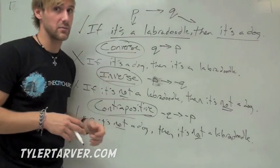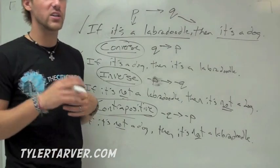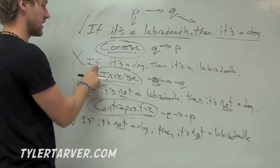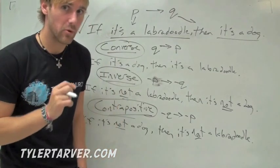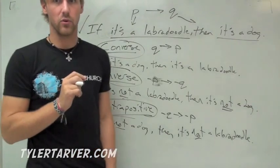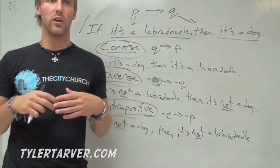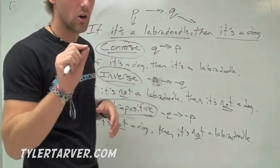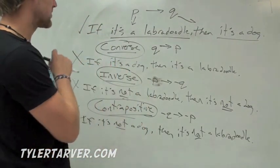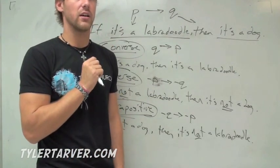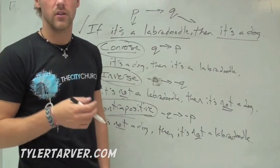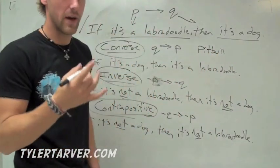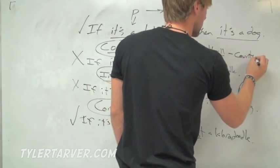When you think of an example that proves the converse wrong — if it's a dog, then it's a labradoodle — that is called a counter example. Just like when you counter in a battle or argument, it's an example that proves it wrong. For this converse, a pit bull is a dog but it's not a labradoodle, so that proves it wrong. That is our counter example.